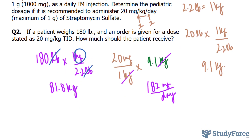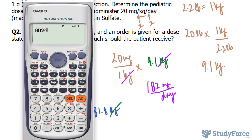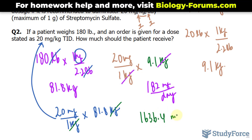According to the medicine itself, we have to administer 20 milligrams per 1 kilogram. So I'll take 20 milligrams per 1 kilogram and multiply it by 81.8 kilograms. The kilogram units cancel out. Multiplying, I end up with approximately 1,636.4 milligrams of this medicine for the whole day.